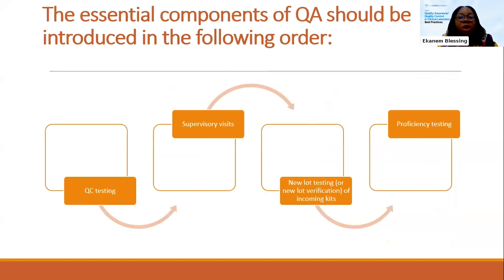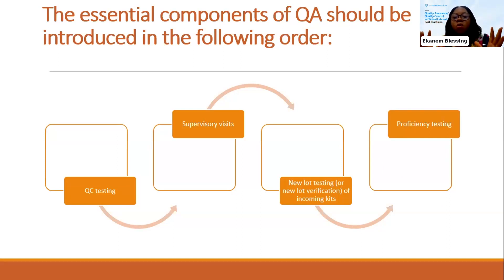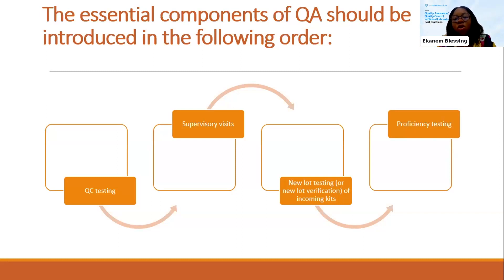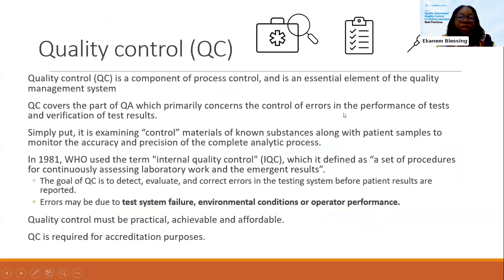The essential components of quality assurance in any laboratory can be implemented through different steps. The first step is quality control testing. When you begin to speak quality assurance and total quality management, it begins with QC testing; you proceed to supervisory visits, new lot testing for verification of incoming kits, and proficiency testing. For diseases like HIV and TB, we have blinded rechecking and retesting. These are the different steps a clinical lab will implement to practice quality assurance.